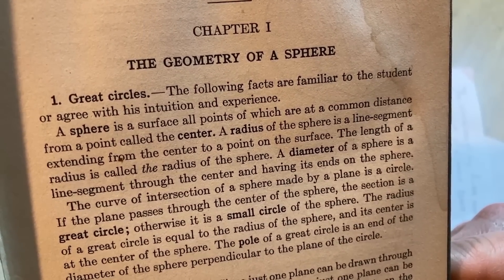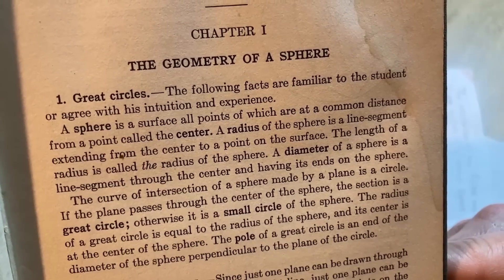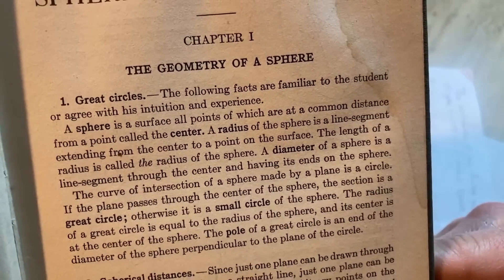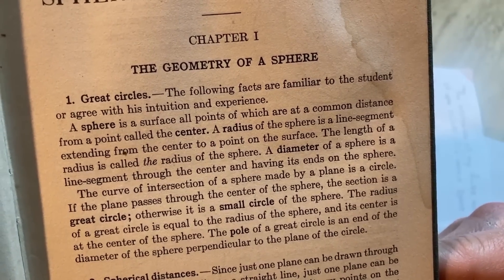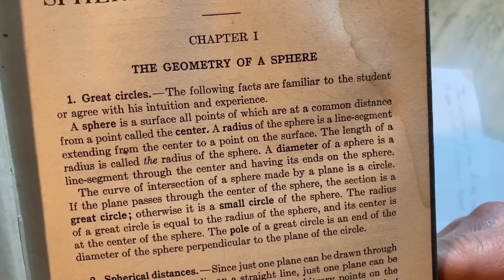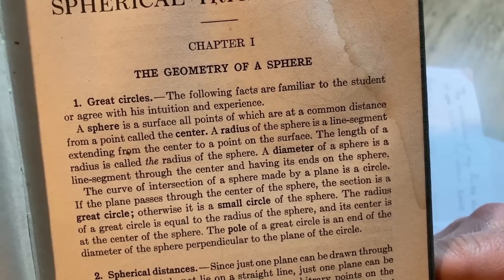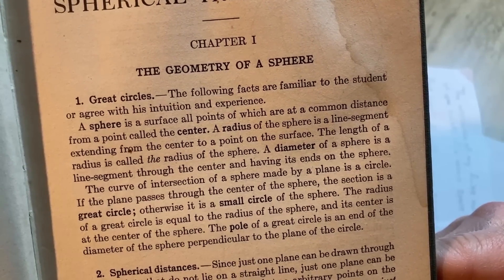A radius of the sphere is a line segment extending from the center to a point on the surface. The length of a radius is called the radius of the sphere. The diameter of a sphere is a line segment through the center and having its ends on the sphere. The curve of intersection of a sphere made by a plane is a circle.